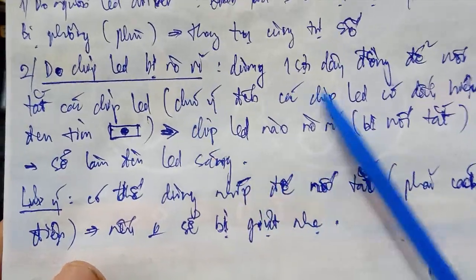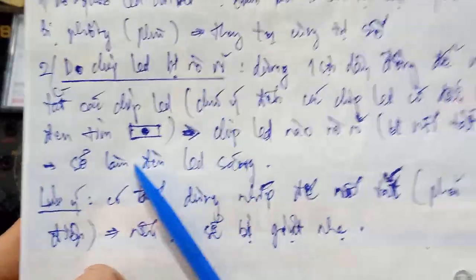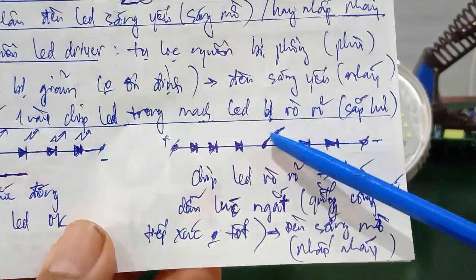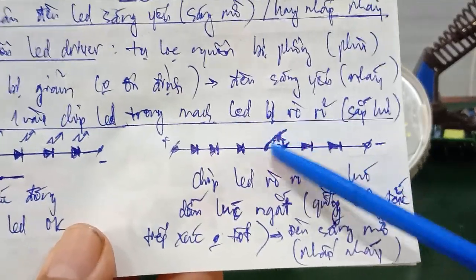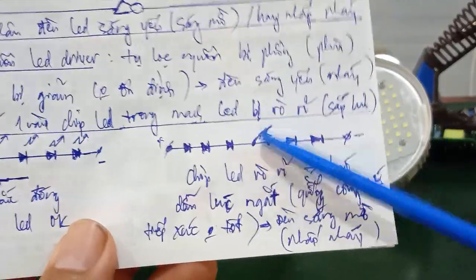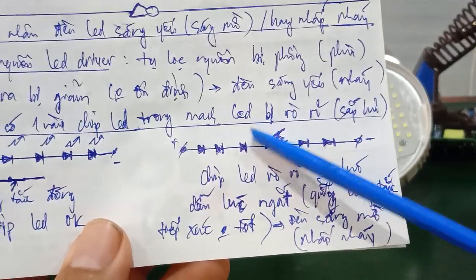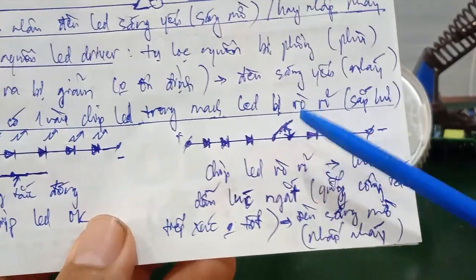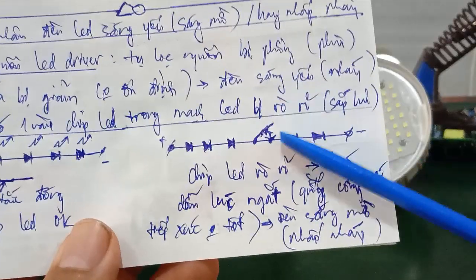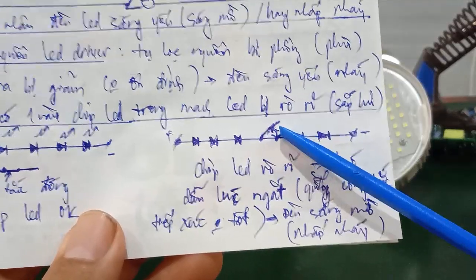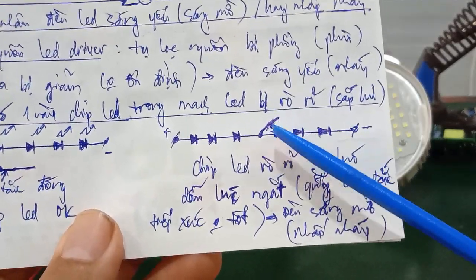Ví dụ mình dùng dây đồng câu qua một con LED bị rò rỉ — lúc đó con chip LED này bị rò rỉ làm mạch dẫn lúc ngắt lúc ngắt chập chờn. Khi câu nối tắt qua con LED đó, bỏ qua con LED đó, thì đèn LED sáng lại. Mình áp dụng phương pháp này để kiểm tra chip LED nào bị rò rỉ, từ đó tiến hành thay thế ngay vị trí câu nối tắt mà đèn LED sáng hoặc hết nhấp nháy.